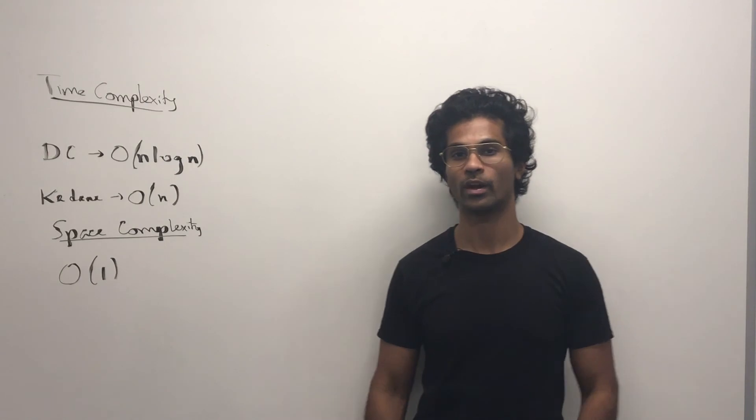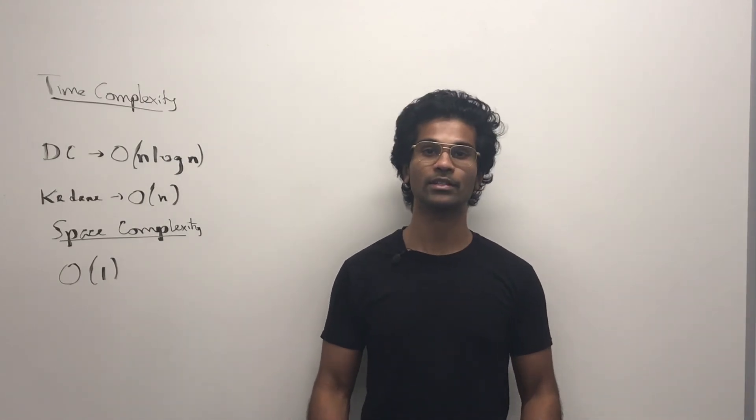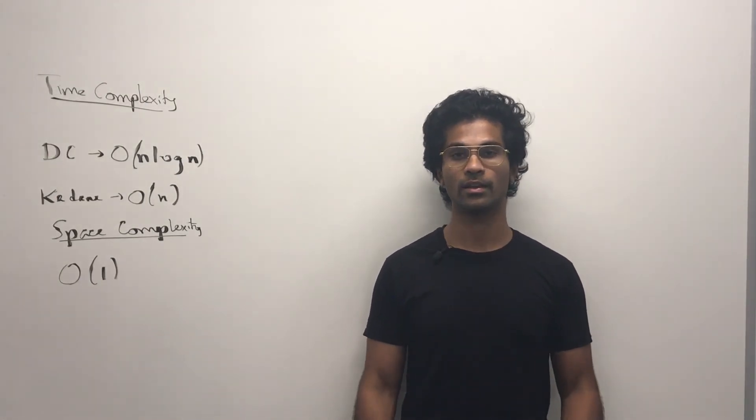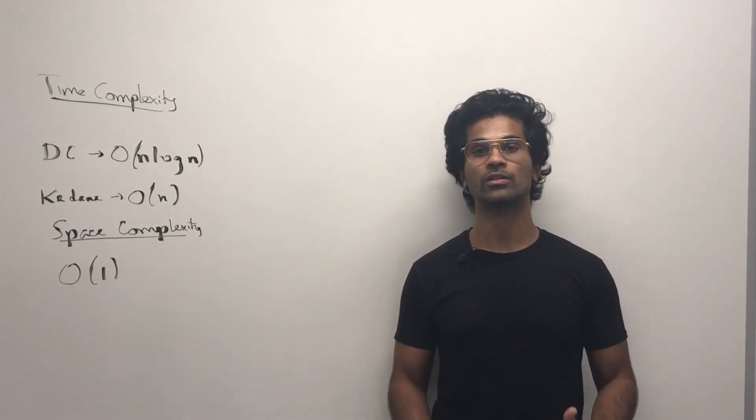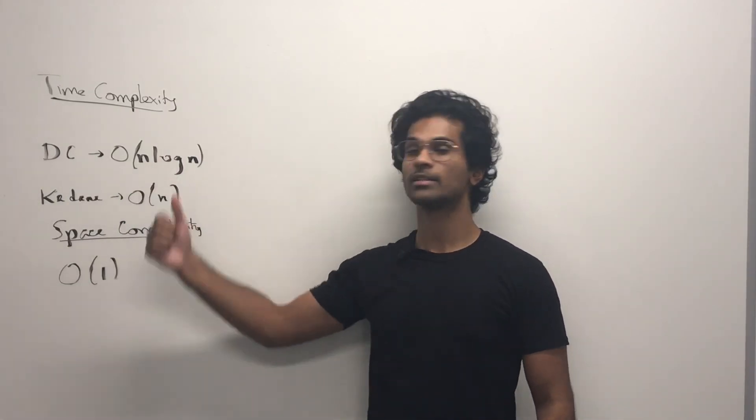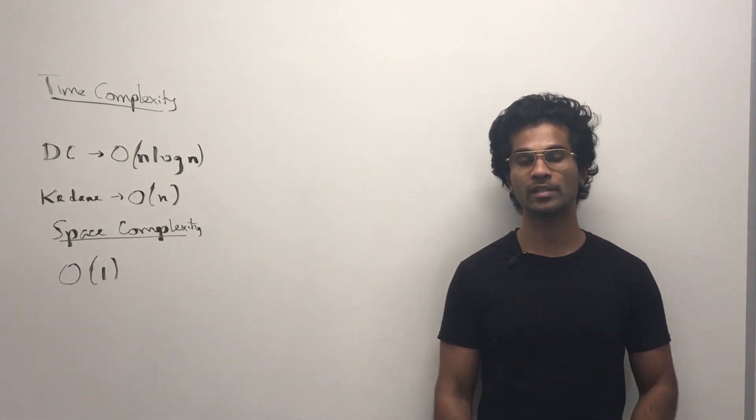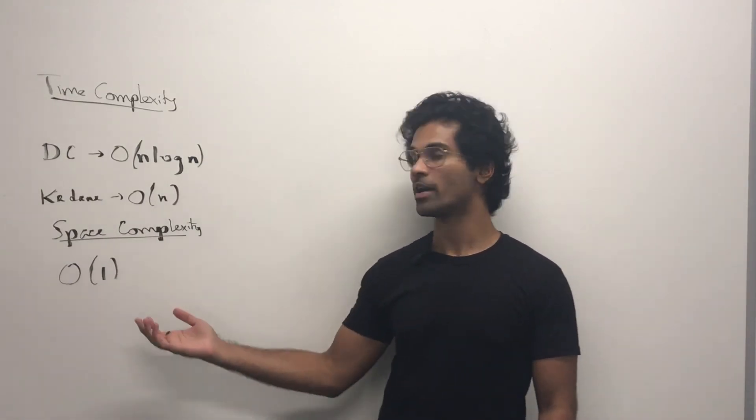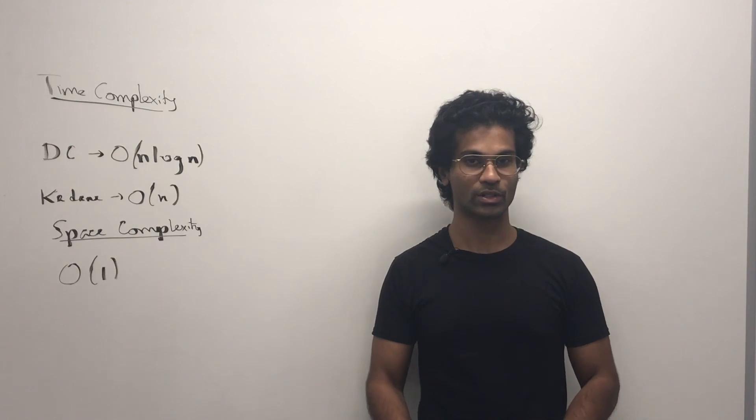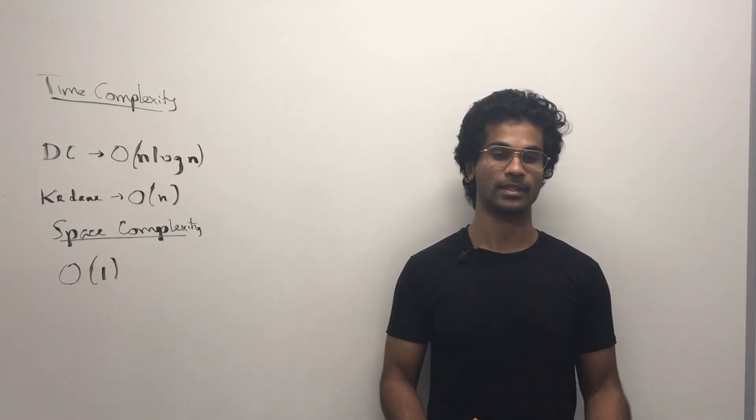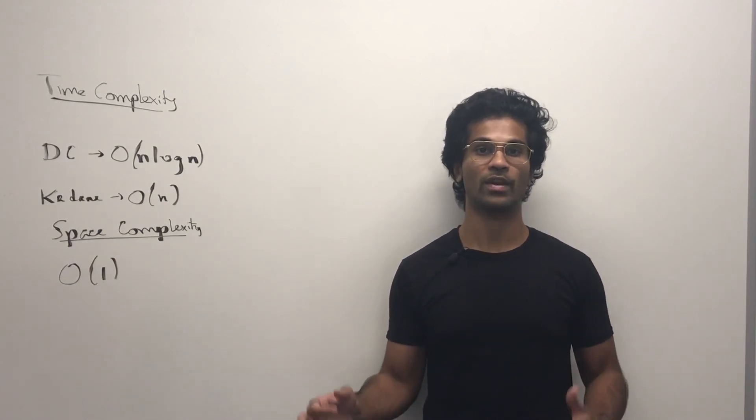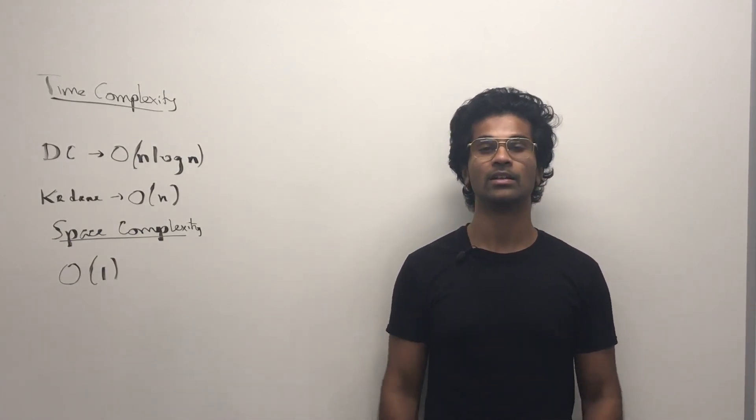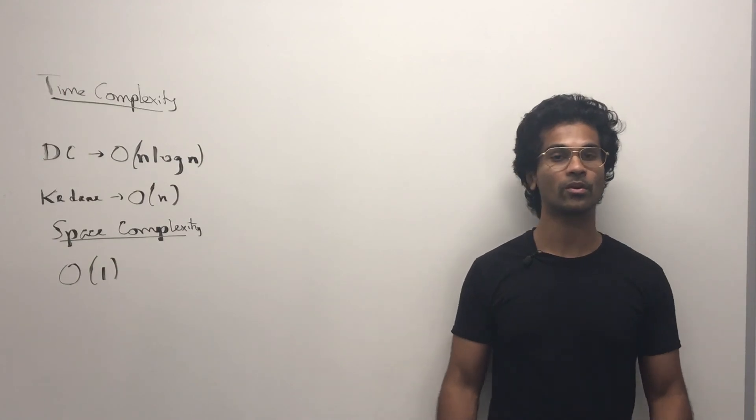For divide and conquer, we're going to have n log n, and for Kadane's, we're going to have O of n. I'll put a link below in the description so you can figure out how we use the master's theorem to come up with this time complexity. And for the space complexity, I'm going to say it's O of n. I'm not counting the recursive stack as space complexity. I just mean to say we're not using any additional data structures to keep track of any states or something like that.